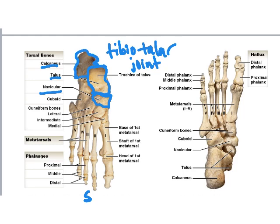Distal to the navicular bone are three cuneiform bones — medial, intermediate, and lateral — which are easy to remember because they're directional. Lateral to the lateral cuneiform is the cuboid bone. To summarize the tarsals: talus on top, calcaneus posterior and inferior as the heel, navicular distal to the talus, three cuneiforms distal to the navicular, and the cuboid lateral to the lateral cuneiform.